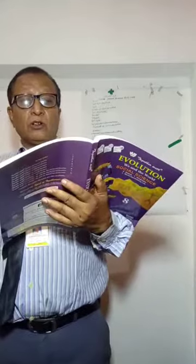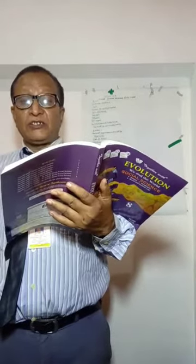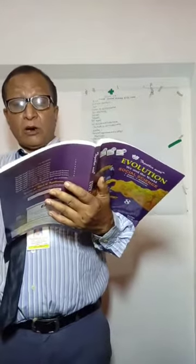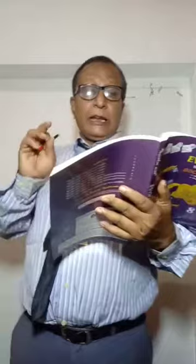Question 2: Contour plowing and terrace cultivation is common among — A. river valleys, B. steep slopes, C. deltas, D. plains. Right answer: B. Steep slopes.